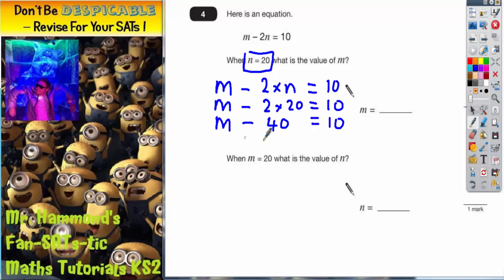So we're now down to m subtract 40 equals 10. What mystery number take away 40 is 10? Some people at this point may already be able to spot the answer is going to be 50. 50 take away 40 is 10.